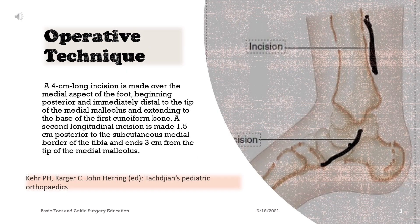Operative technique. A 4 cm long incision is made over the medial aspect of the foot, beginning posterior and immediately distal to the tip of the medial malleolus and extending to the base of the first cuneiform bone. A second longitudinal incision is made 1.5 cm posterior to the subcutaneous medial border of the tibia and ends 3 cm from the tip of the medial malleolus.